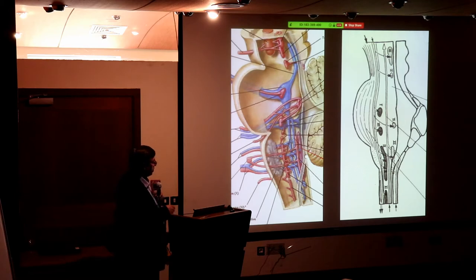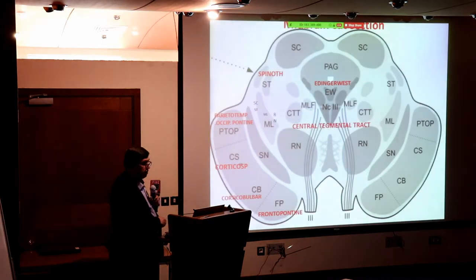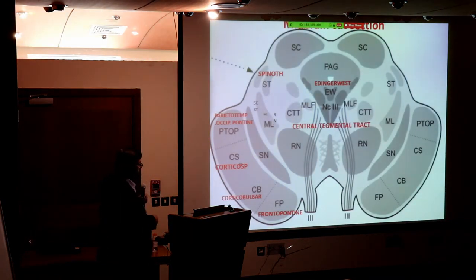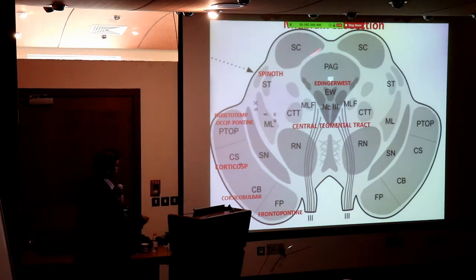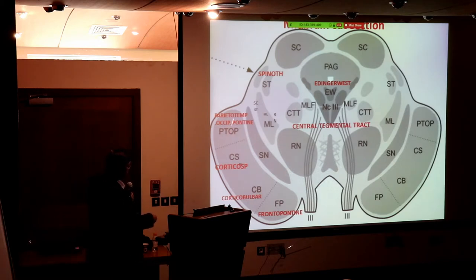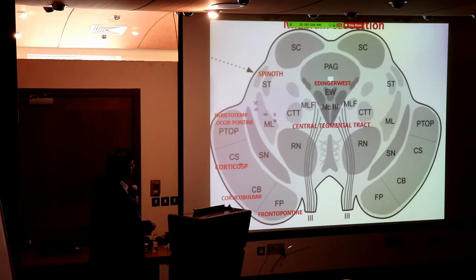Therefore, the best way to reach the brain stem surgically is laterally — you avoid the long tracts anteriorly and the cranial nerve nuclei posteriorly. Looking at transverse cuts of the midbrain: the crus contains the corticospinal tract in the middle, the corticopontine, and the parietoccipital parts. There is also the substantia nigra, the red nucleus, the medial lemniscus for sensation, and the spinothalamic tract for pain.